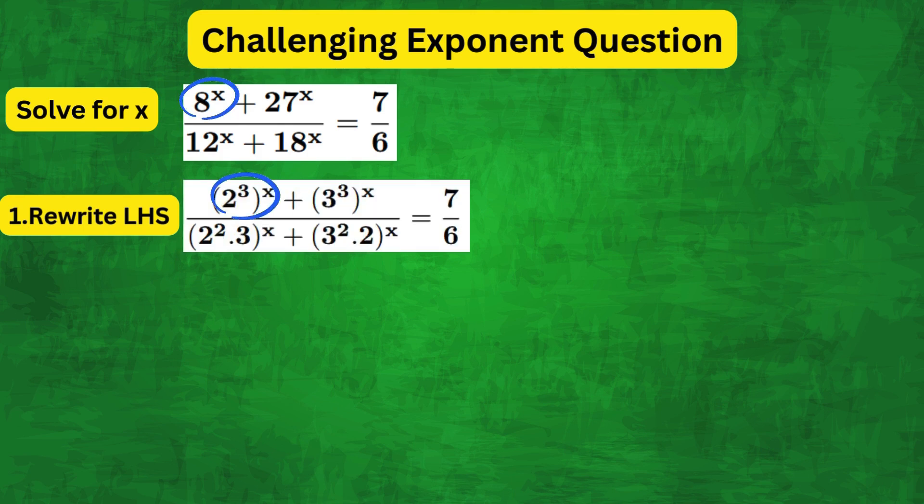Let's rewrite this as 2 cubed to the power of x plus 3 cubed to the power of x over 2 squared times 3 whole to the power of x plus 3 squared times 2 whole to the power of x.